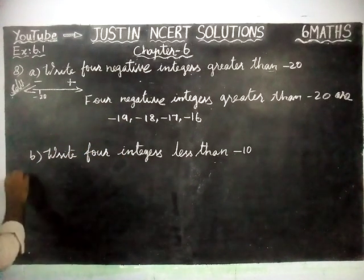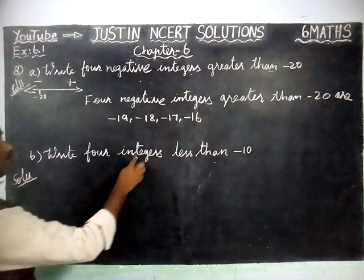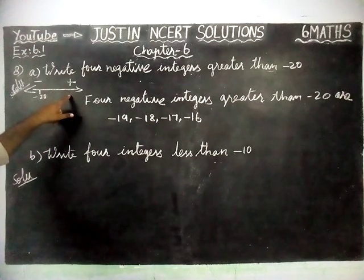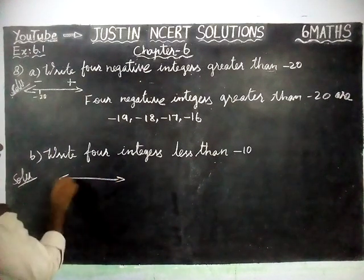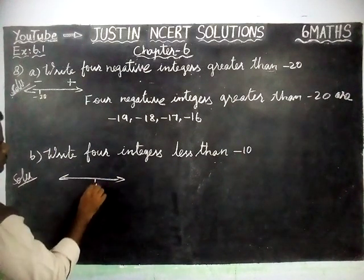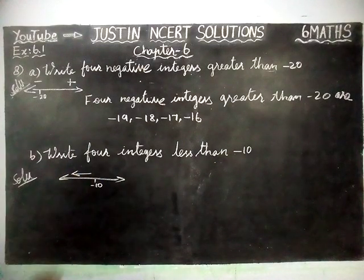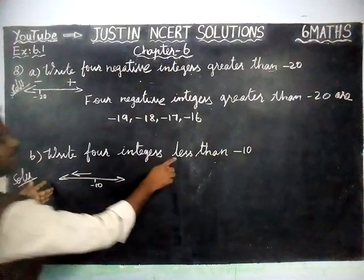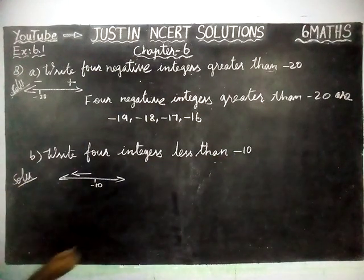Next question: write 4 integers less than minus 10. Here, on the number line, if minus 10 is here, we have to move left hand side. When we are moving left hand side, value will decrease. So less than minus 10, we have to move left hand side from here.